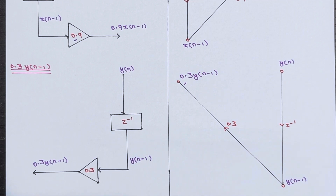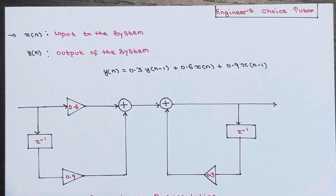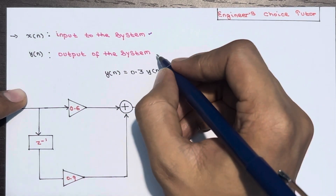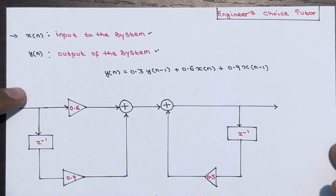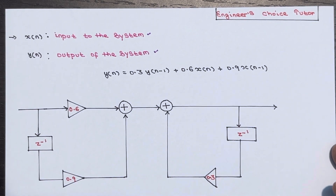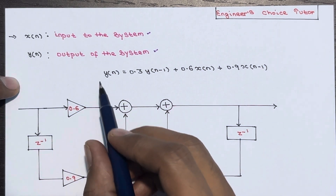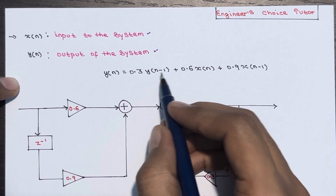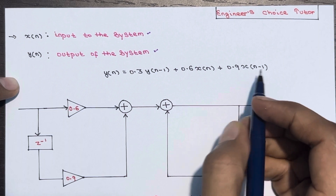Now we have to sum up these three parts. It's better to take them part by part so it will be easy to understand. Let's see the final picture. x(n) is the input to the system and y(n) is the output of the system. The difference equation is y(n) = 0.3·y(n-1) + 0.6·x(n) + 0.9·x(n-1).